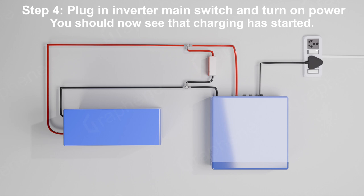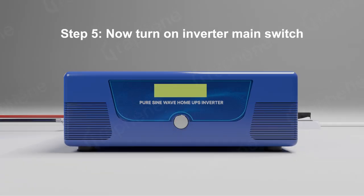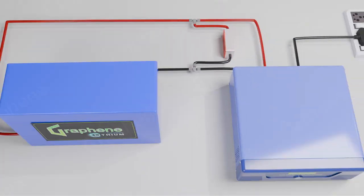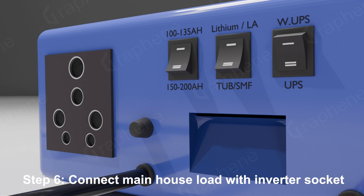Step 4: Plug in inverter main switch and turn on power. You should now see that charging has started. Step 5: Now turn on inverter main switch. Step 6: Connect main house load with inverter socket.